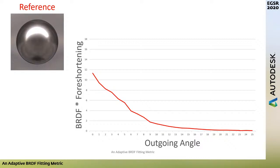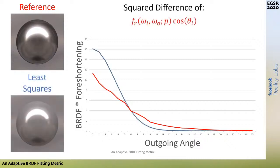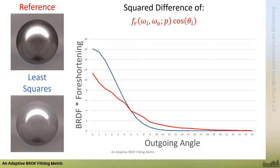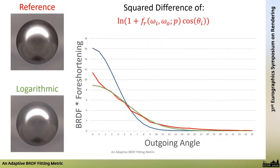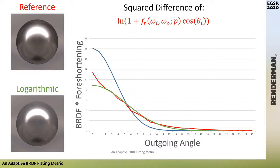Let's look more closely at the problem with nickel. In the top left is a rendering of the measured material. This graph shows a slice of the BRDF times foreshortening for normal incidence plotted by outgoing angle — highest reflectance is backscattering at 0 degrees. A least squares fit is shown in blue: not a good fit, because the specular highlight dominates the error. Lowe et al.'s logarithmic compression, shown in green, greatly improves visual quality. But logarithmic compression is not necessarily the best — a better metric may exist.